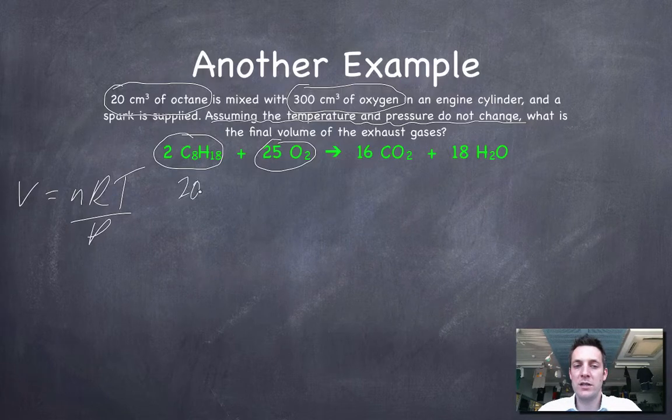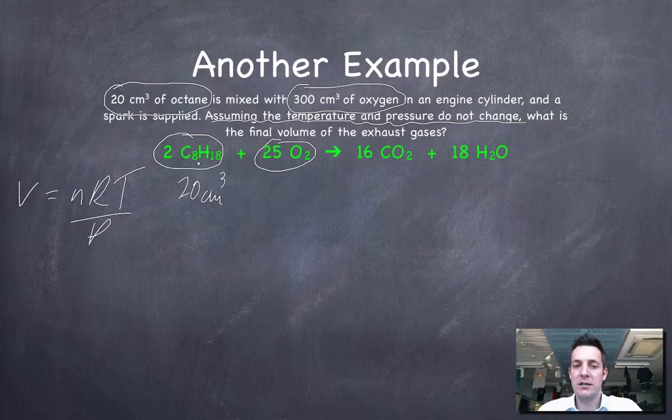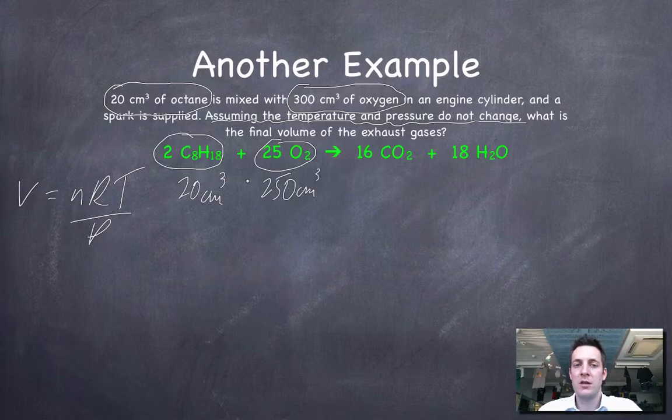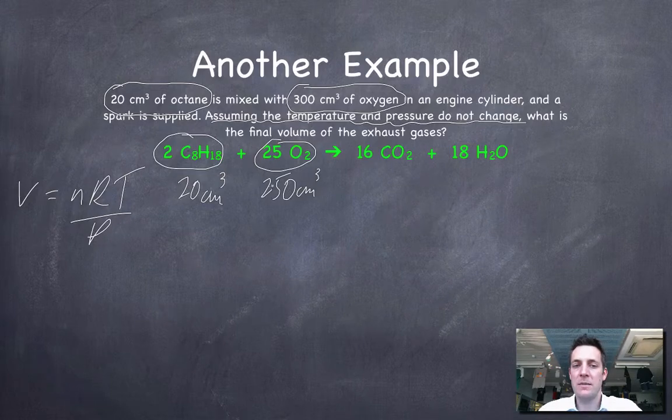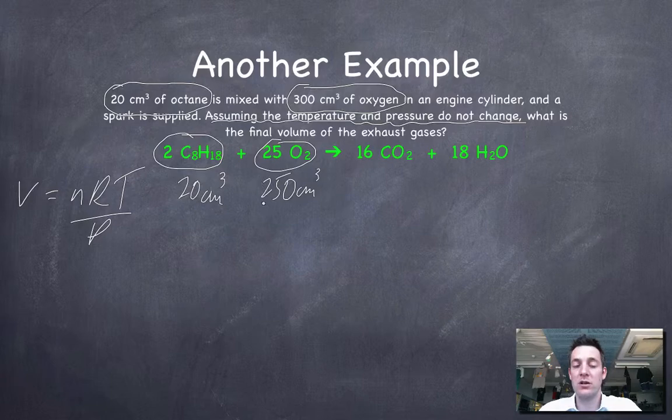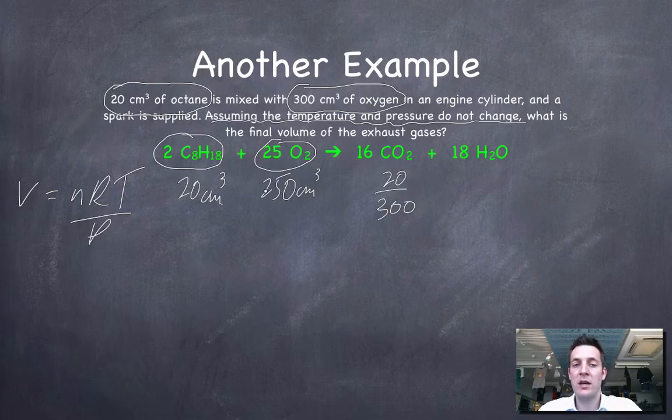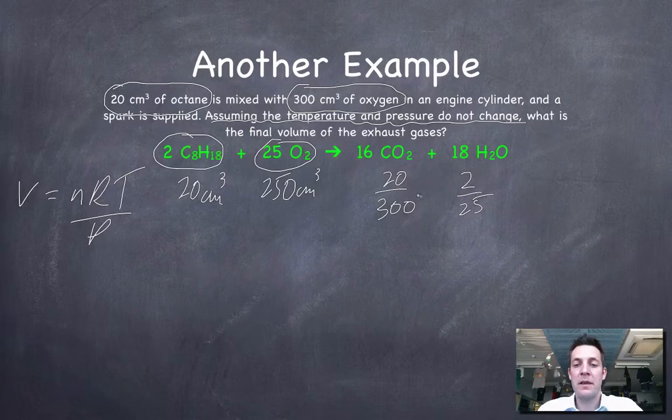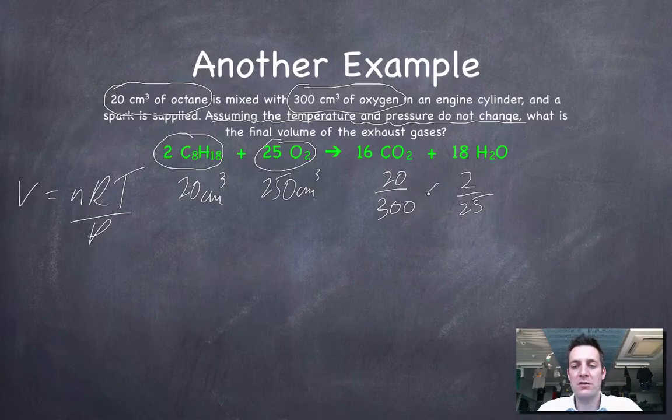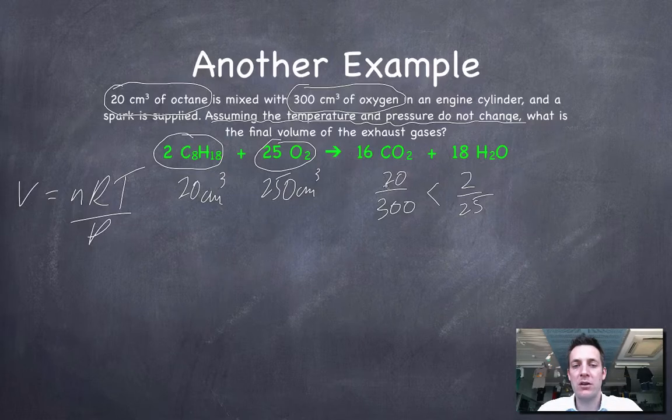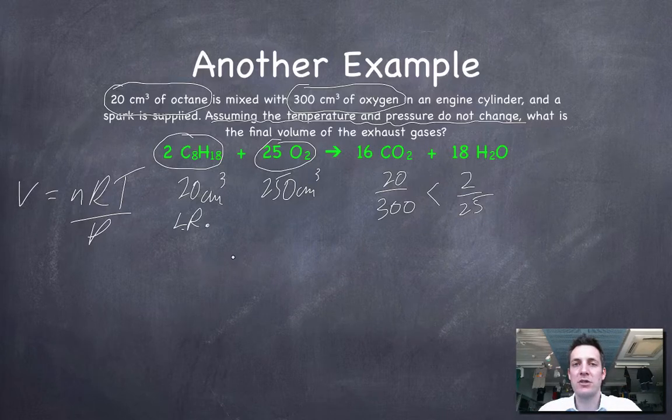So if I had 20 cm³ of octane, I would need 12.5 times that amount, or in other words, 250 cm³ of oxygen. So clearly, because I've got 300, this is in excess. This is the limiting reagent. And I'm going to base the number of moles of exhaust gases on the number of moles of octane that I've got. If you wanted to do that the other way that I showed you earlier in the previous film, you could say that the actual volume is 20 over 300, and I've put the octane on top there. The ideal volume is 2 over 25. 20 over 300 is 1/15th. This is 1/12.5. And 1/12.5 is greater than 1/15th. So in other words, this number is too small to make this ratio as big as the ideal ratio. So the octane is my limiting reagent. So it doesn't matter how you find the limiting reagent as long as you can do it reliably.